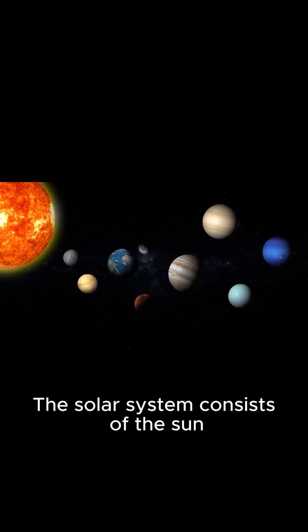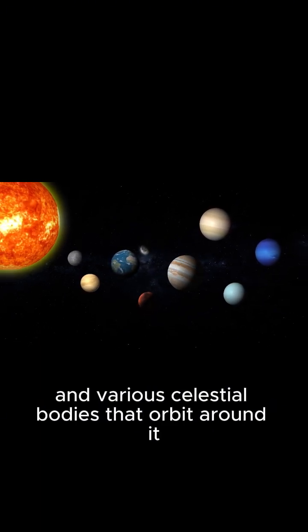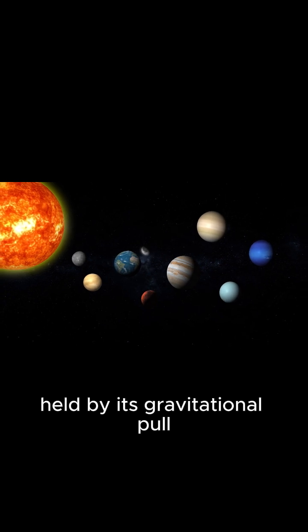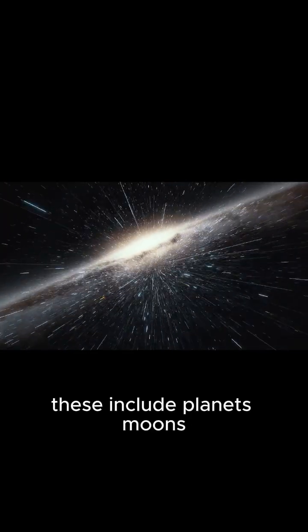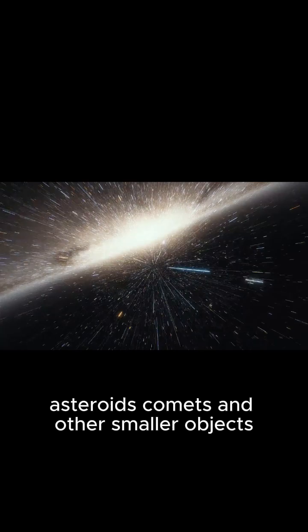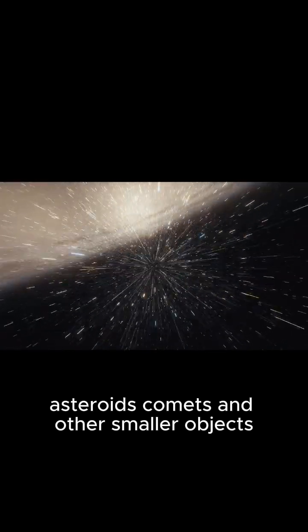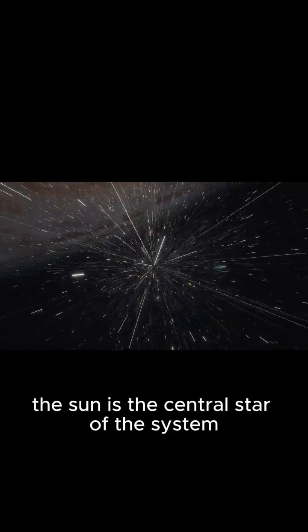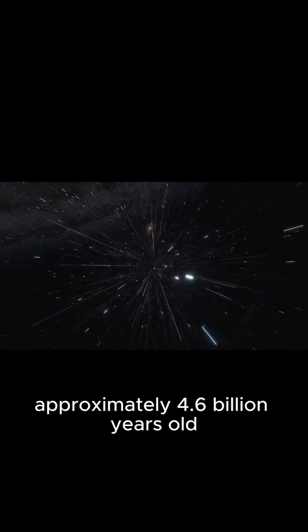The solar system consists of the sun and various celestial bodies that orbit around it, held by its gravitational pull. These include planets, moons, asteroids, comets, and other smaller objects. The sun is the central star of the system.